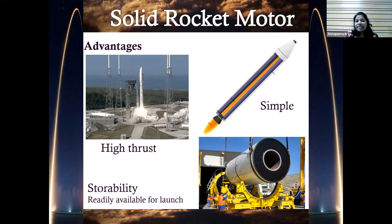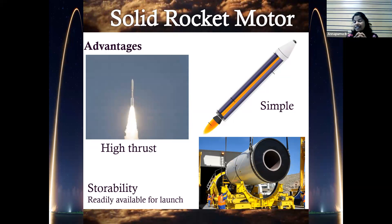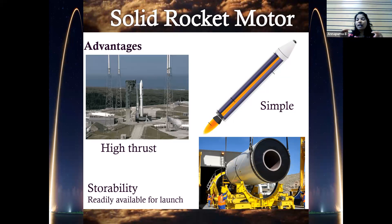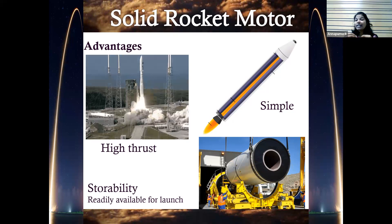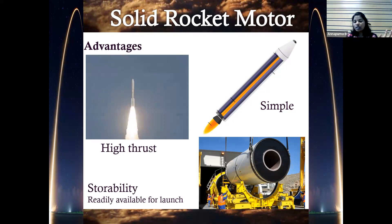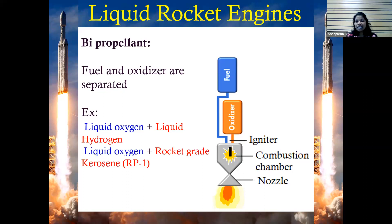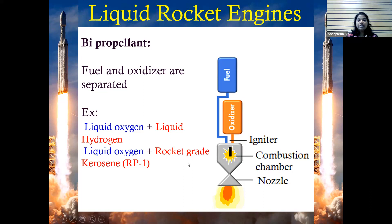One disadvantage of solid rocket motors is safety. Since the solid fuel and oxidizer are already combined, once ignited it's like a firecracker — you can't stop the burning. If an emergency happens, you have no control and it may explode. This is why liquid rocket engines were developed, where fuel and oxidizer are kept in separate chambers. Typical liquid propellant combinations include liquid oxygen with liquid hydrogen, which is very high performance, and liquid oxygen with rocket-grade kerosene.